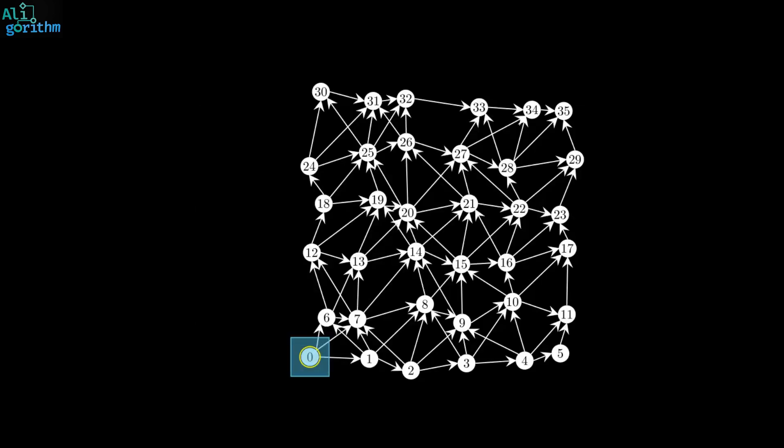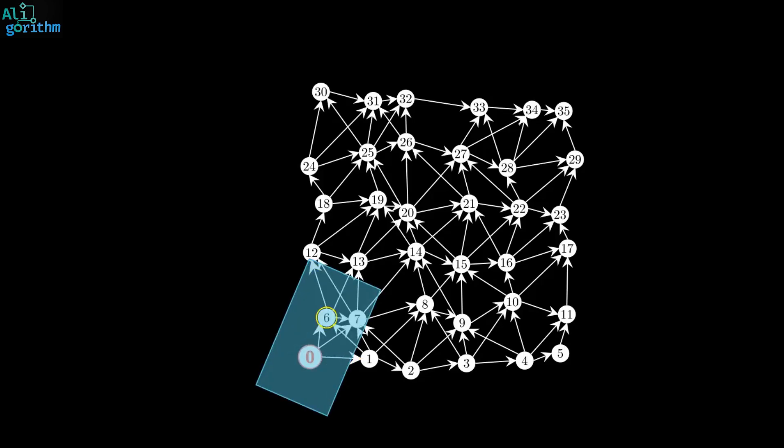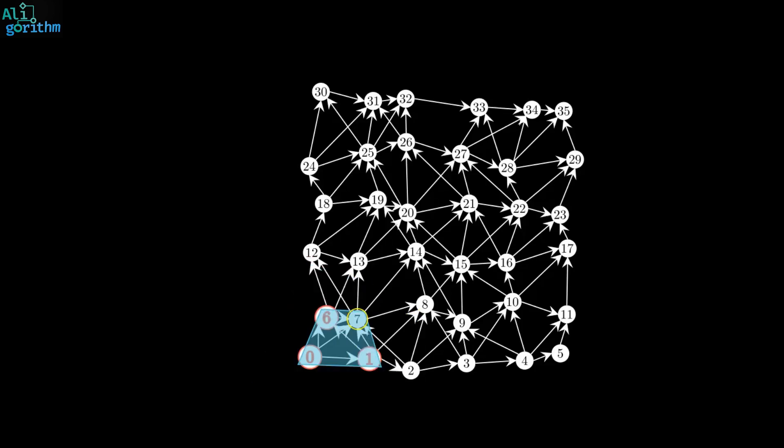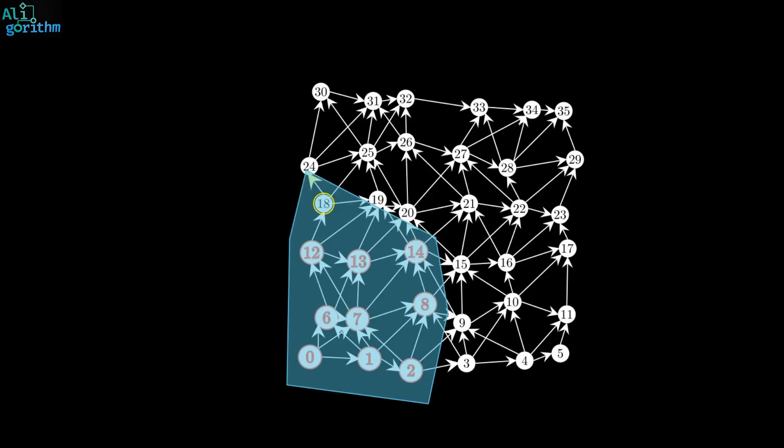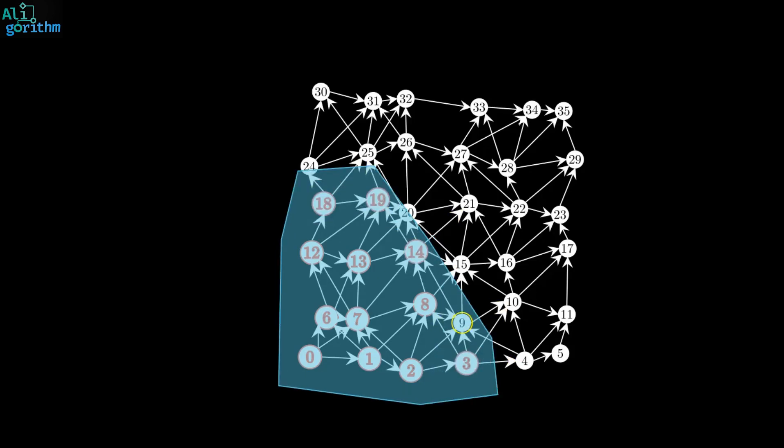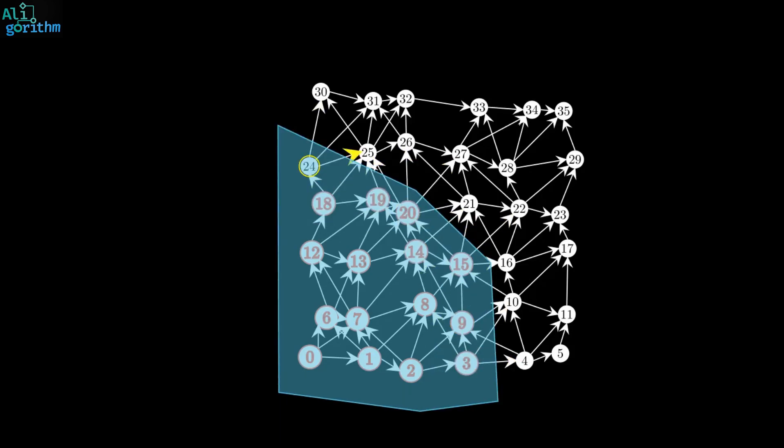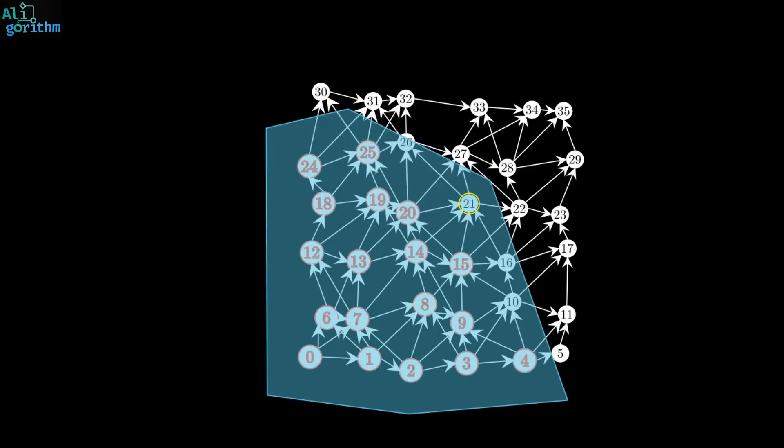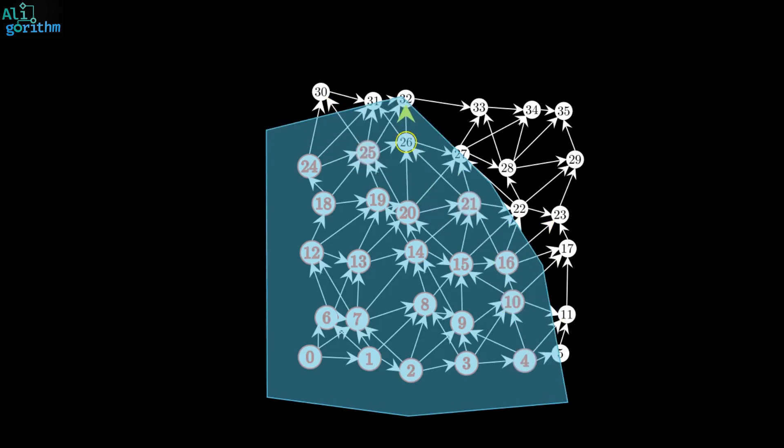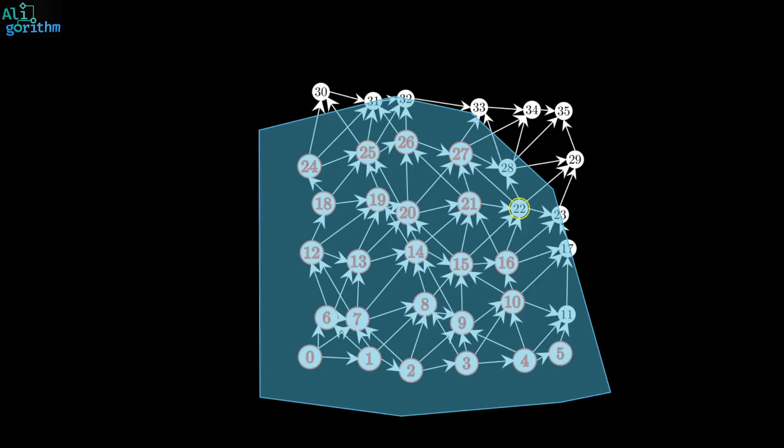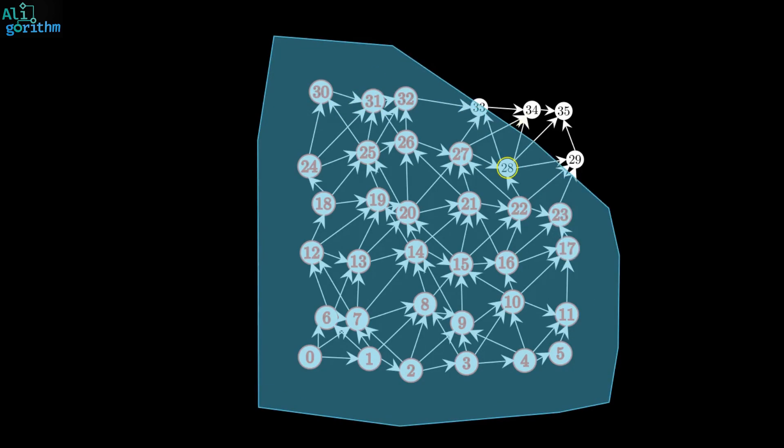As you can see here, Dijkstra's algorithm starts with a starting vertex, it scans its neighbors and discovers the shortest path to them, marking this area in blue. Then, it extends its frontier by relaxing these edges and adding more vertices to the blue area. This process continues until it reaches the destination, or includes the entire graph in the blue area.